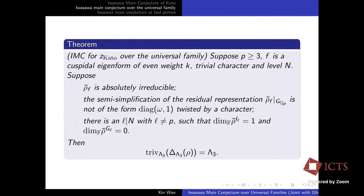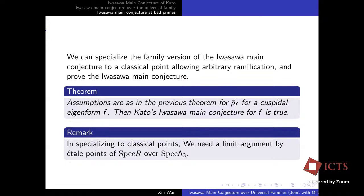Basically, the first assumption means ρ̄ is absolutely irreducible, and the last assumption ensures there is a maximal unipotent element mod p. So we have included the assumptions by Kato on the big image of the Galois representation. We can then specialize the family version to classical points to get Kato's Iwasawa main conjecture for cusp forms allowing arbitrary ramification, including the supercuspidal case.